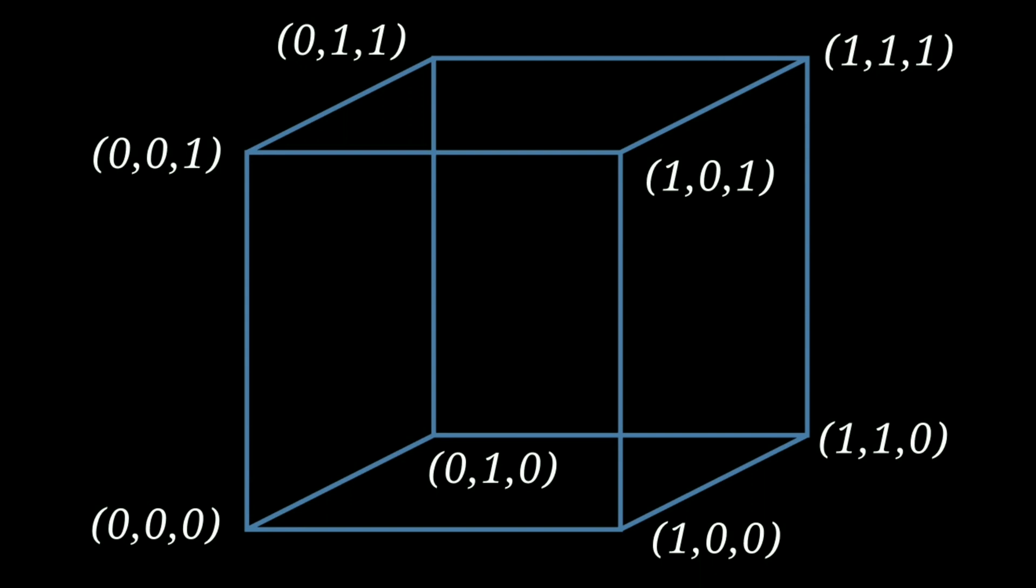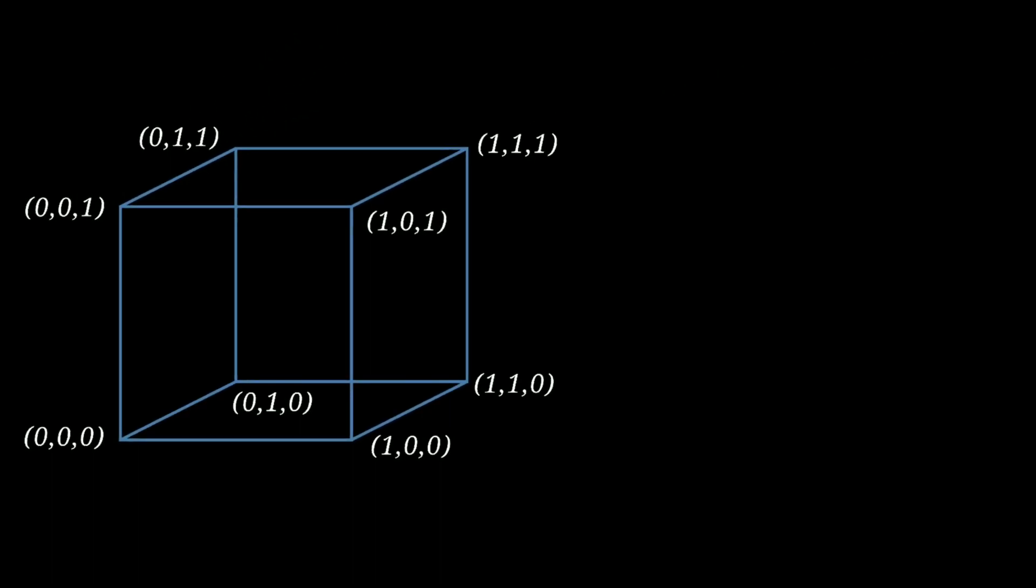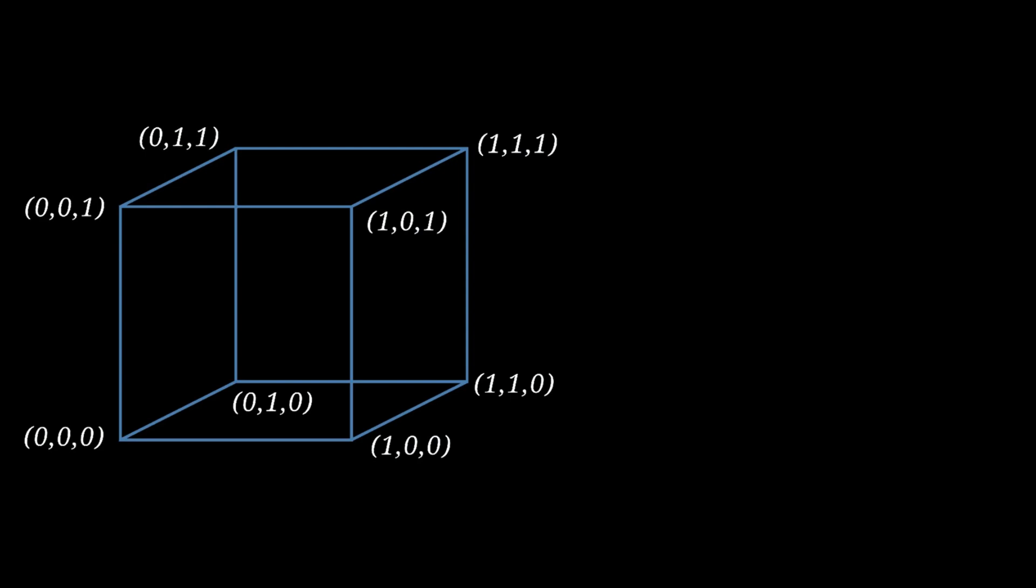It's also a good idea to use the defining features of the objects in the question. In using the coordinate system to number the vertices of the cube, we have already used up its definition. The second object in the question, of course, is the equilateral triangle.